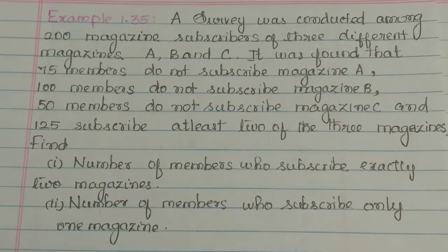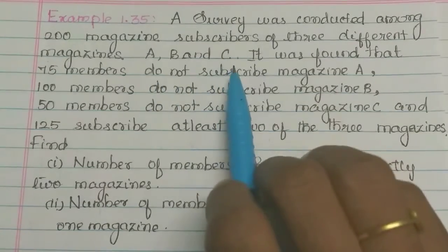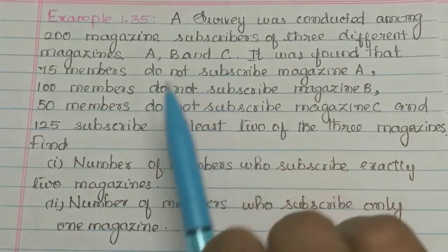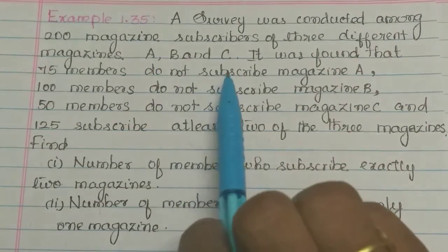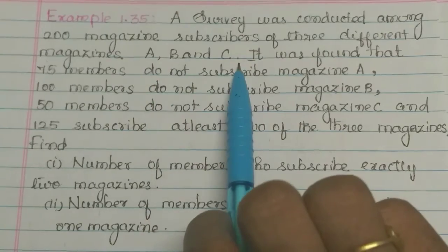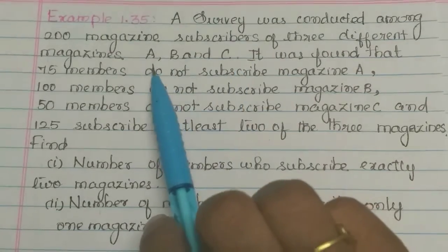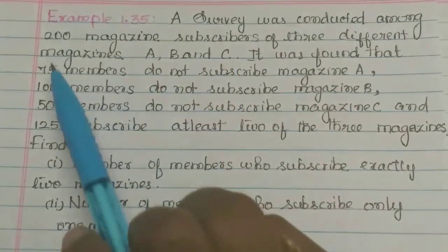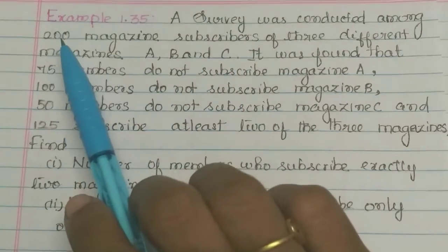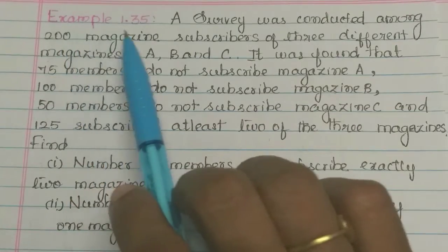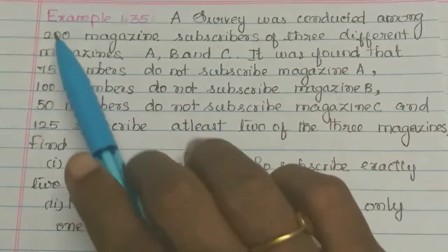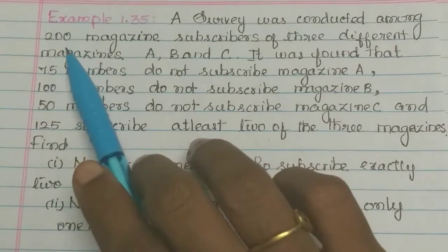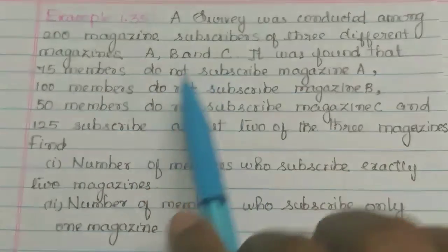A survey was conducted among 200 magazine subscribers of 3 different magazines A, B, and C. So A, B, C are the 3 magazines. The total number of magazine subscribers is 200 for magazines A, B, and C.